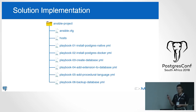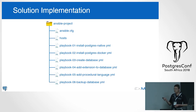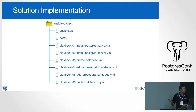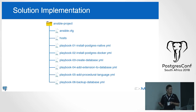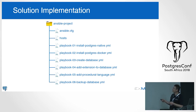Now let's go through some Ansible script examples. This project is a simple one — no roles, vars, or host_vars. I want to focus on the Ansible-specific usage of the modules. I'll go through the config file, the hosts file, and then step through each of the Postgres modules.